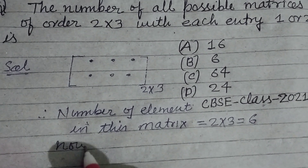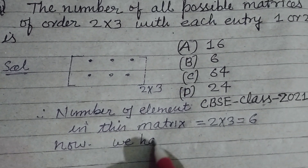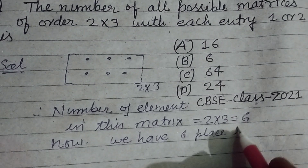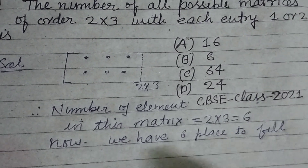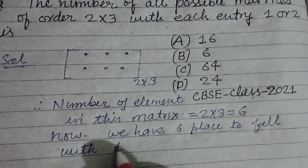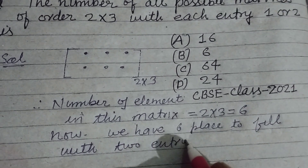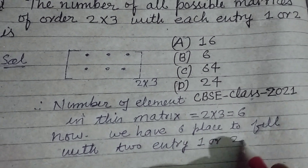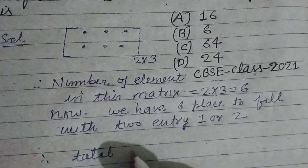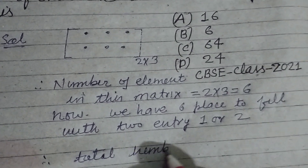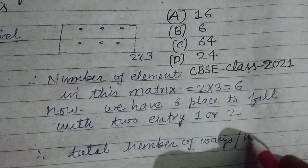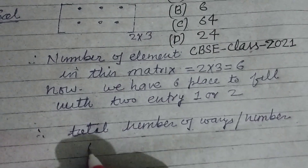Now we have 6 places to fill with 2 entries: 1 or 2. So the total number of ways, or number of matrices,